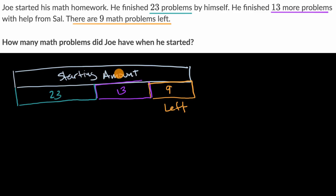So if you want to know the starting amount, how many math problems did Joe have when he started, you have to add together 23 plus 13 plus 9. How do we do that? Let's do it one at a time. Let's think about how many he finished, and then we can add to that how many was left.